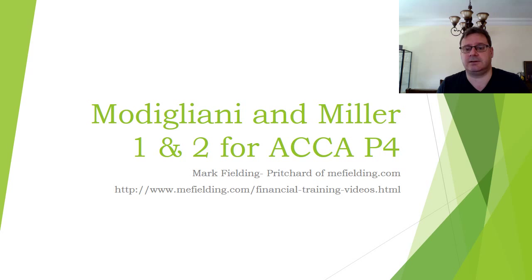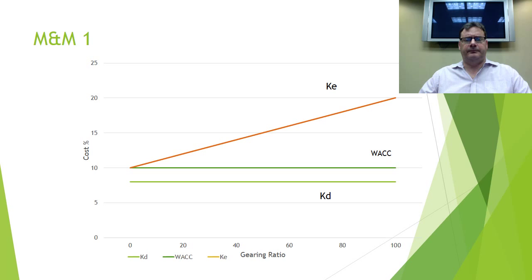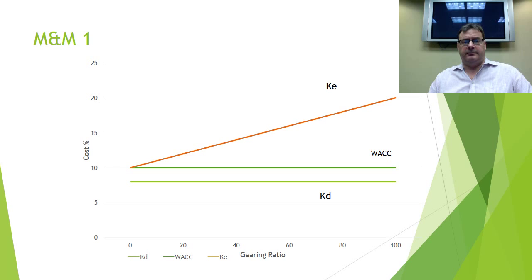If you're really interested, go and read the original Modigliani and Miller papers — it's actually pretty interesting. We've now moved to the boardroom. Have a look at this slide. Remember what I told you: Modigliani and Miller is a theory. We're now looking at their first theory from 1958, and the easiest way to understand it is by looking at a graph.